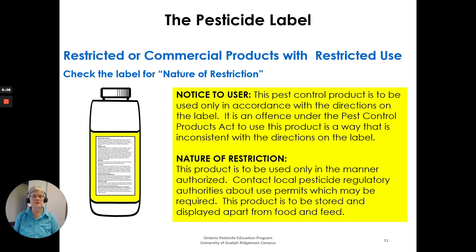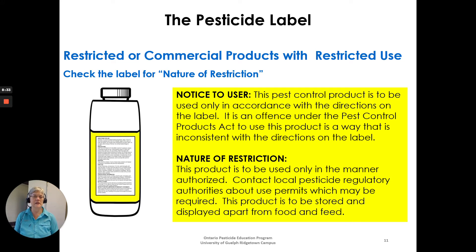There are additional considerations for restricted or commercial products. There could be a 'nature of restriction' box at the beginning of the label. For example, it might state: 'This product is to be used only in a manner authorized. Contact local pesticide regulatory authorities about use permits, which may be required.' It may also note requirements for storage and display apart from food and feed.